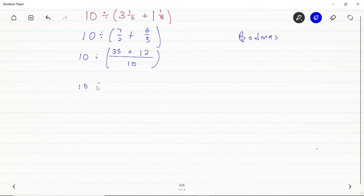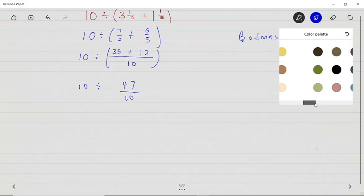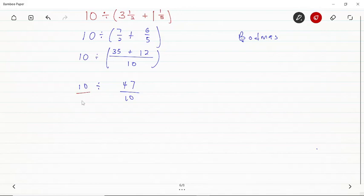10 divided by 47 over 10. Now the 10 here is standing alone, so it's assumed that it has over one, because 10 over one is the same as 10. So what we have to do is reciprocate the fraction on the